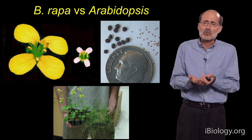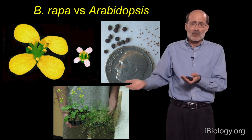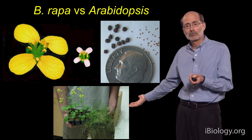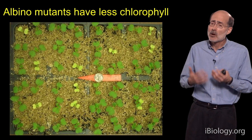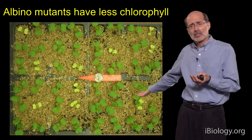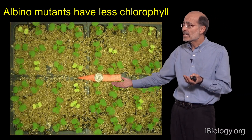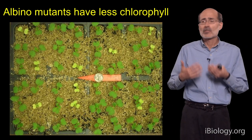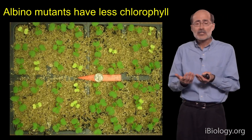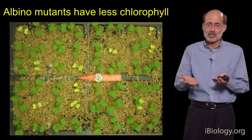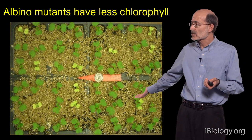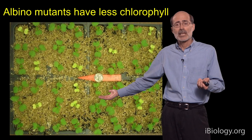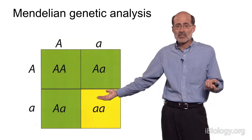Now I want to show you some of the mutants that we've found with our teams of undergraduates and high school students working along with Scott. Here's an example of a mutant — an albino mutant — illustrated here as these light yellow plants. This is a mutant that doesn't produce as much chlorophyll as the normal plant, which we call the wild type. This is caused by a single gene mutation that's recessive, so you see this nice pattern of Mendelian segregation in this population of plants.